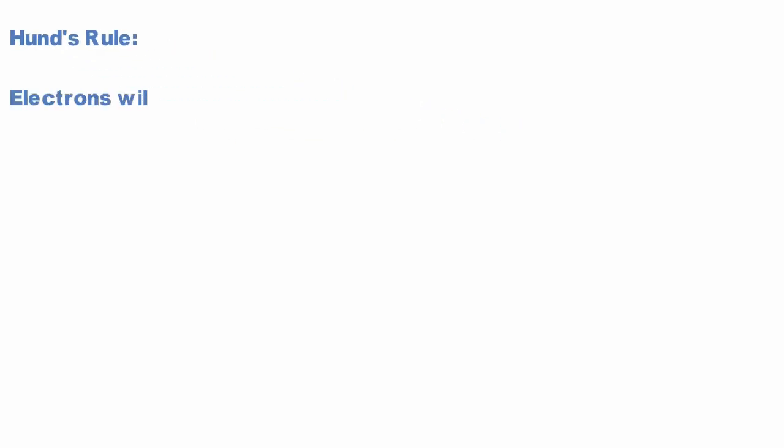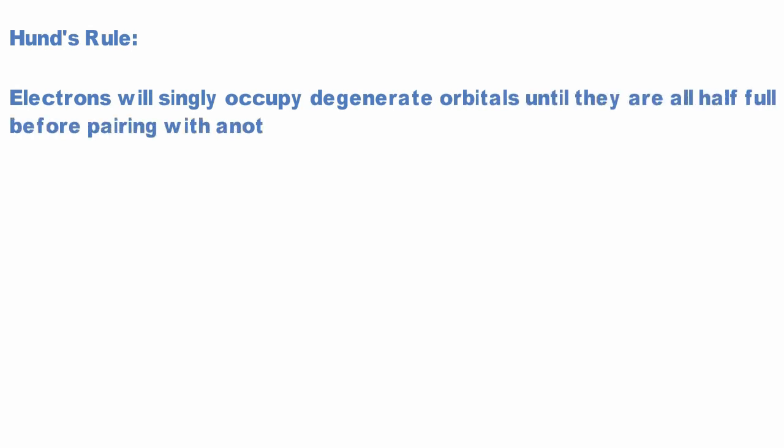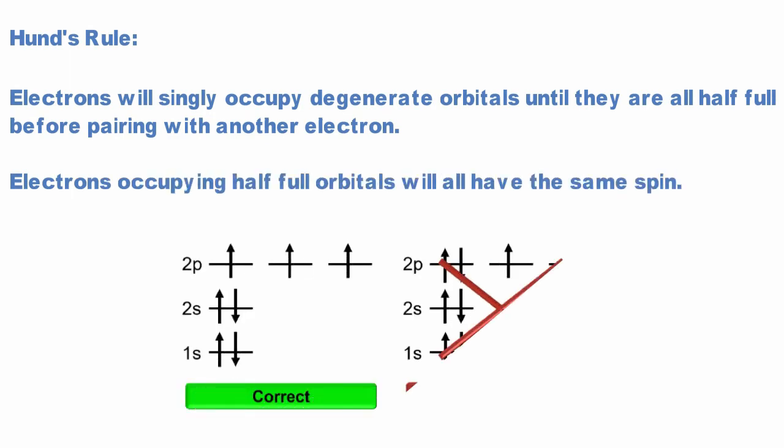We just have one more concept to discuss before we complete our picture of quantum numbers, and that is Hund's rule. Hund's rule states that electrons will singly occupy degenerate orbitals until they are all half-full before pairing up with another electron. Electrons occupying half-full orbitals will all have the same spin.